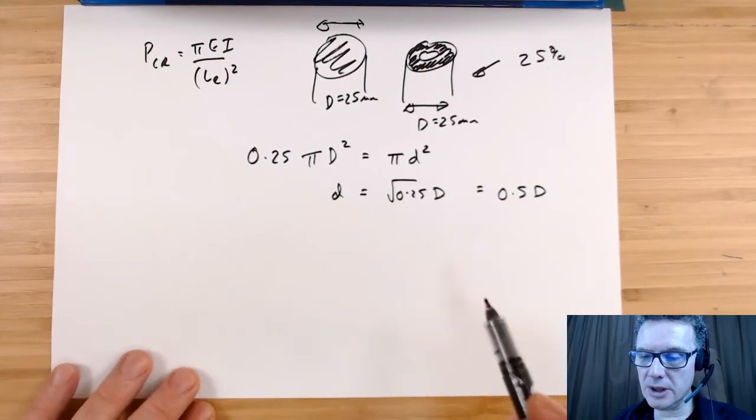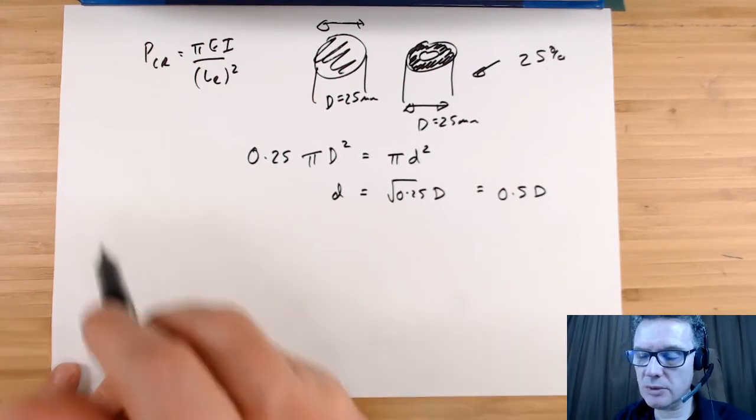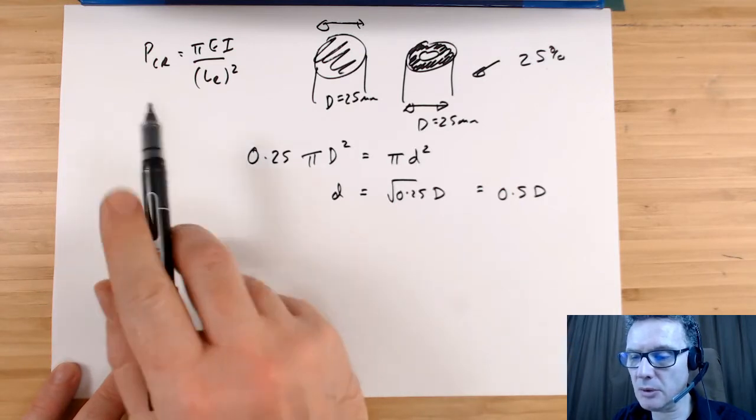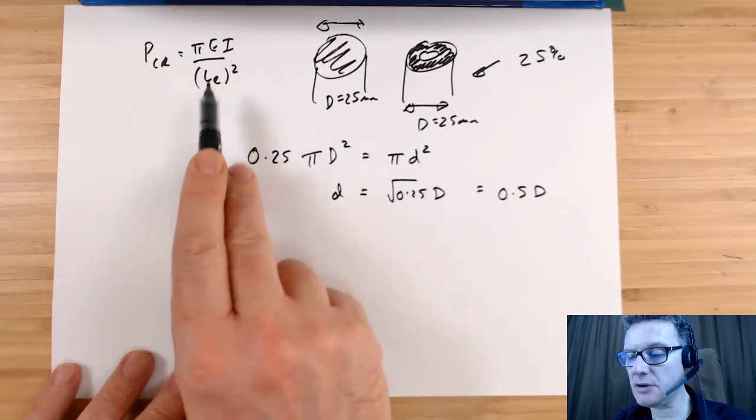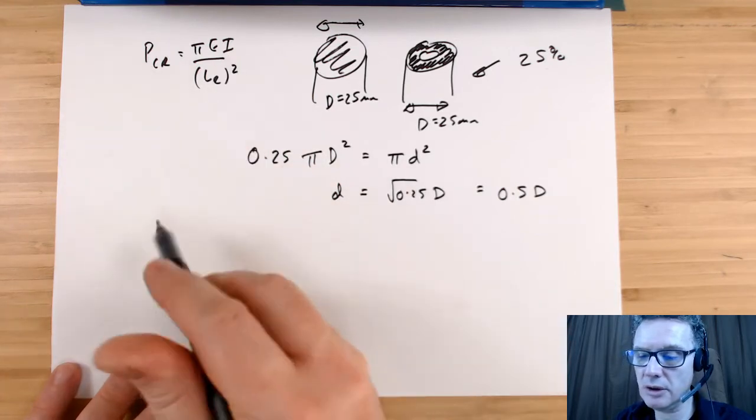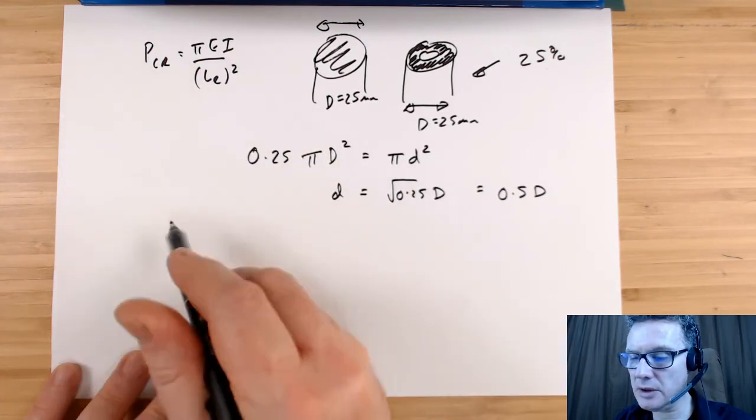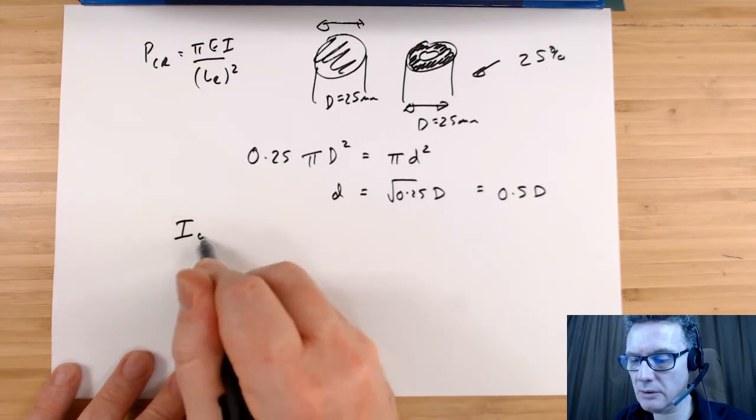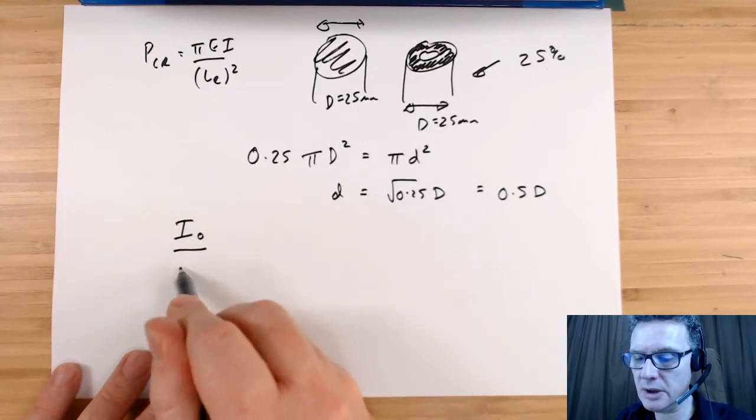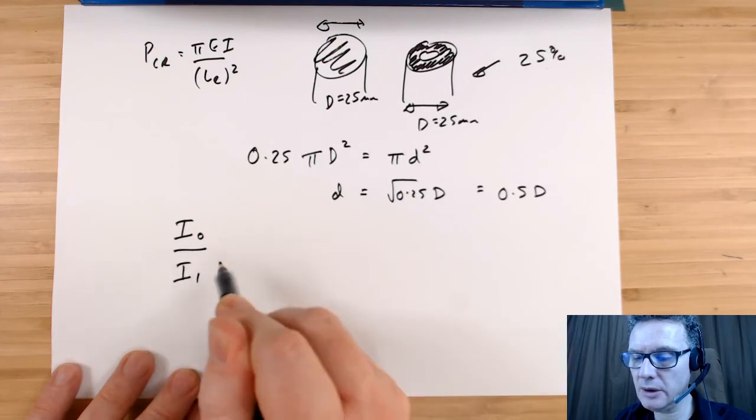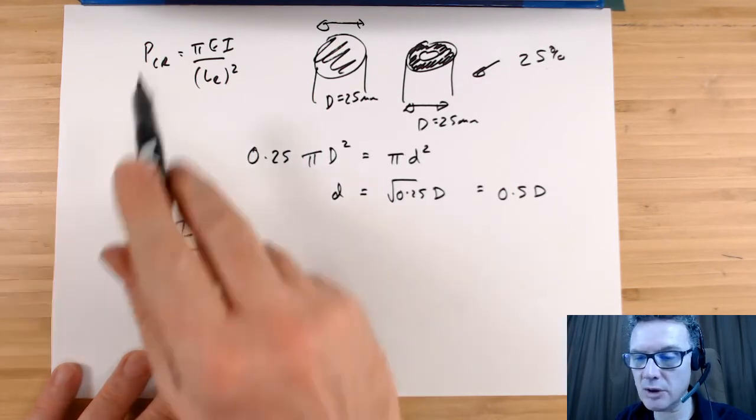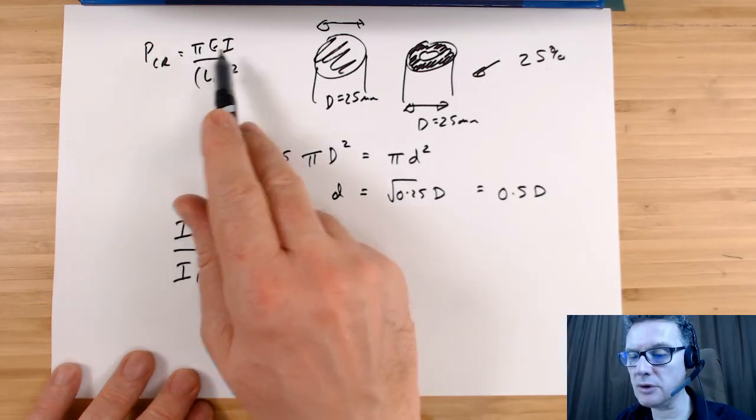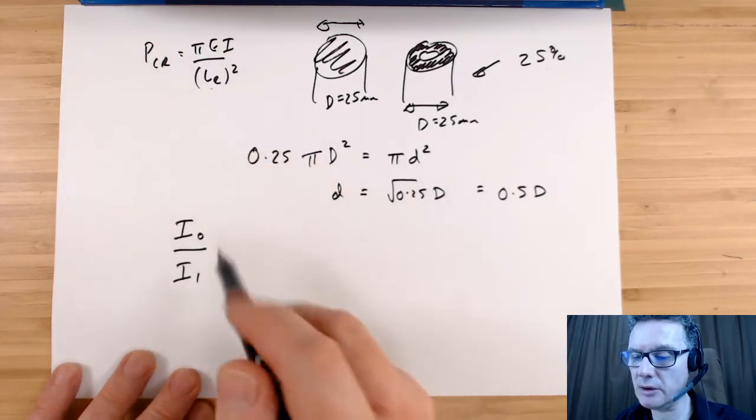The next thing we can do is say what's going to change. E's not changing, effective length is not changing, but I is changing. So if I find original I and the new I, that will tell me how much the critical load has reduced, because everything else is staying constant.